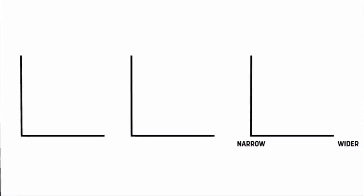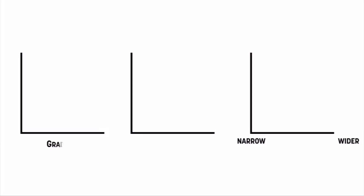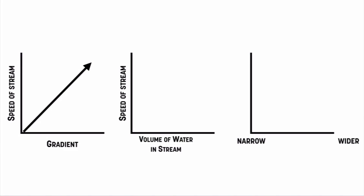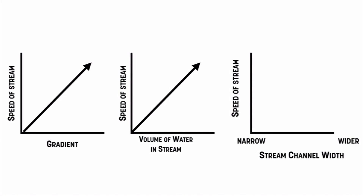Some general relationships: as you increase the gradient, or slope of the ground, you get a faster stream. The more water flowing in the stream, the faster that stream is going to move. And comparing a narrow channel to a wider stream channel, the wider the channel is, the slower the water is going to travel — the water is actually much slower in a wider stream bed.